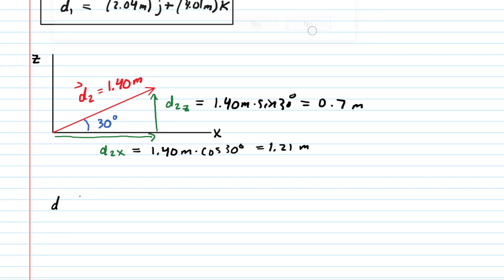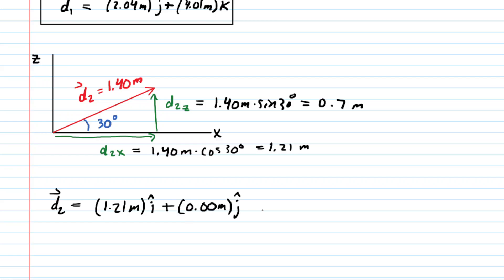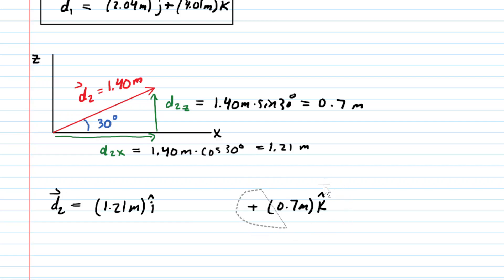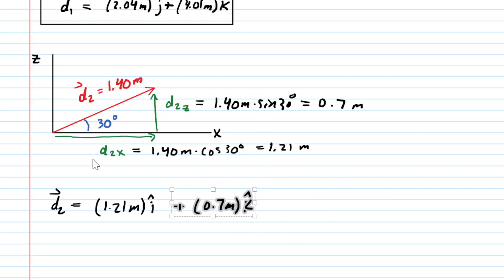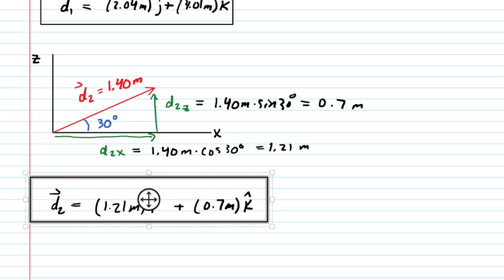We can now express vector D2 in unit vector notation. It does have an X component of 1.21 meters in the I hat direction. There is no Y component, since vector D2 is exclusively on the XZ plane, so that J hat term is 0. The Z component is 0.7 meters in the K hat direction. Eliminating the zero Y component, we now have both vector D1 and vector D2 in unit vector form, which will be very useful in the subsequent parts of the problem.